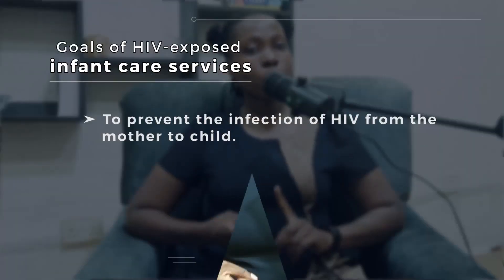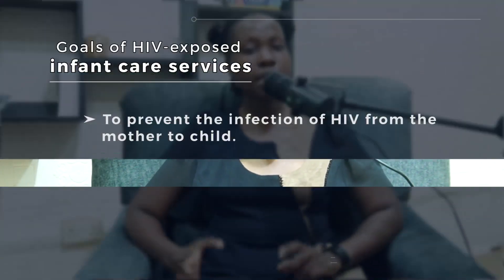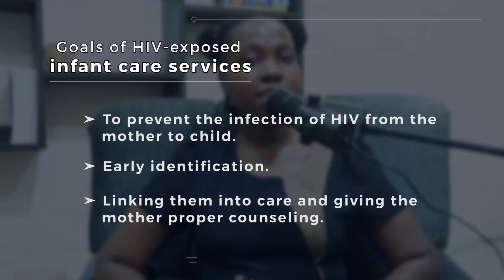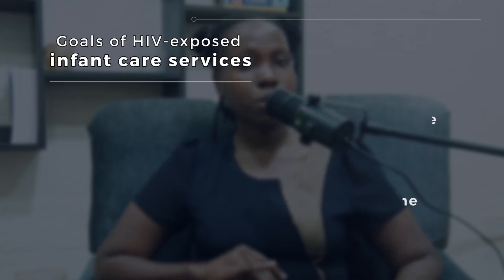One of the goals of the EMTCT is to ensure that vertical transmission of HIV is less than five percent here in Uganda. The other goal is for early identification in case a child has been infected with HIV — how early can we identify and treat it to prevent any lifetime debilitations, and then linking them into care and giving the mother proper counseling so that this child can have as close to a normal life as possible.